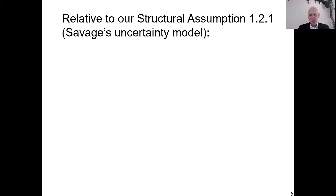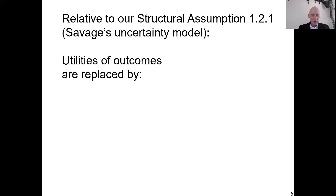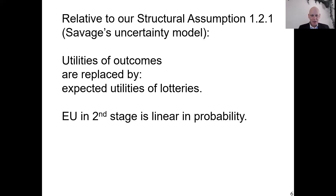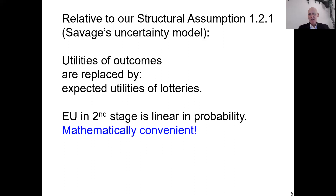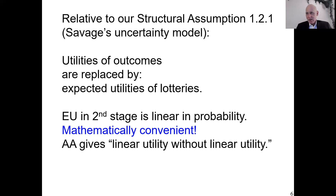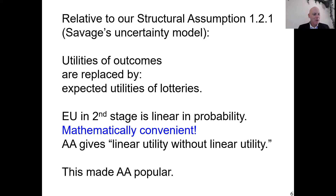Comparing to the Savage framework, in formula 1.2.1 of the book, outcomes were evaluated by utilities. Now, instead of outcomes, we have lotteries, and they are evaluated by expected utilities — that's the replacement taking place. The expected utility in the second stage is linear in probability, and that is mathematically convenient. The Anscombe-Aumann framework gives you linearity in probability without committing to linear utility, because the utility of money can still be non-linear. But you have linearity in probability, so you can use that linearity. That's the big reason the Anscombe-Aumann framework is so popular for theoretical work.